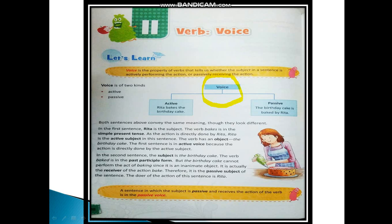In active voice, the subject performs the action. For example, 'Rita bakes the birthday cake.' Rita is the subject here because she is performing an action — this sentence is all about Rita. Rita is the doer, so she is the subject. Rita bakes the birthday cake — this is the active voice because the subject Rita is performing the action.